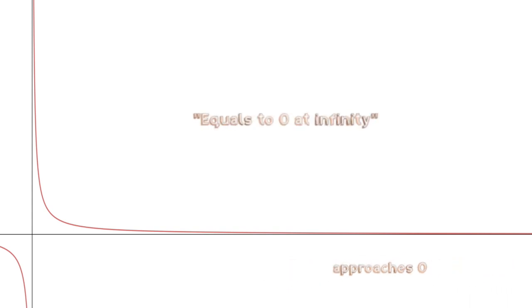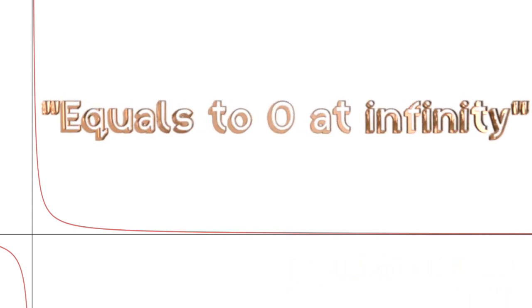So, our function approaches zero infinitely closely. And this is why it makes sense to say that it equals to zero at infinity, even though it never actually crosses x axes. So, once again, treat limits as a new, weird condition of equality.